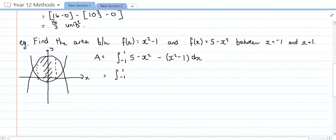So that's between minus 1 and 1. I'm going to collect my like terms. So I've got negative x squared take away x squared, which is negative 2x squared. And then I've got 5 minus minus 1, which is 5 plus 1, so plus 6 dx. The next thing is to anti-differentiate, so that becomes negative 2x cubed on 3, plus 6x, and that's between negative 1 and 1.